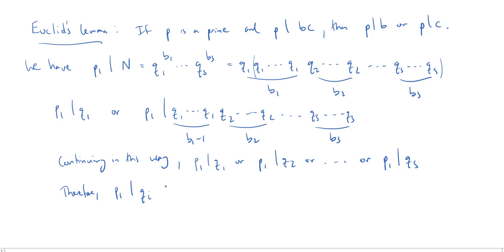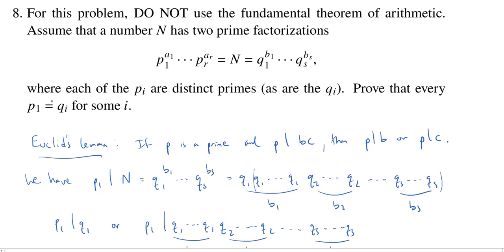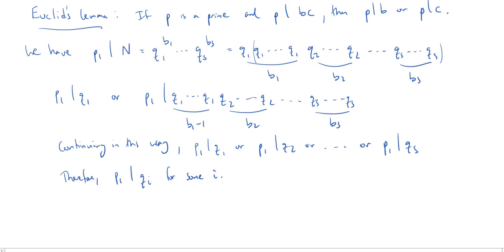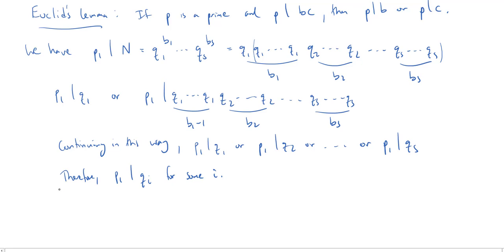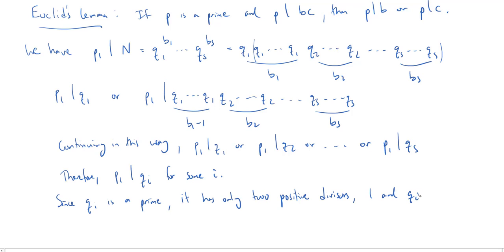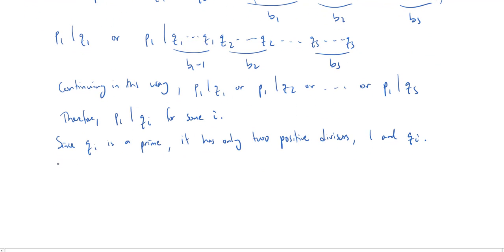Therefore, p1 divides q_i for some i. But we didn't just want divisibility — we wanted equality. Since q_i is a prime, it has only two positive divisors: one and q_i. Since p1 is prime, p1 does not equal one. So p1, being a divisor of q_i, must equal q_i. Therefore p1 equals q_i. That's what we wanted to prove.